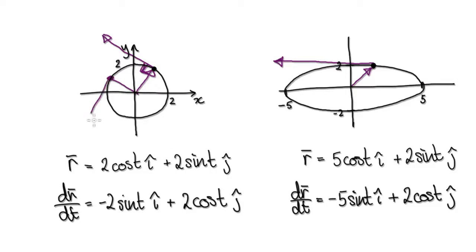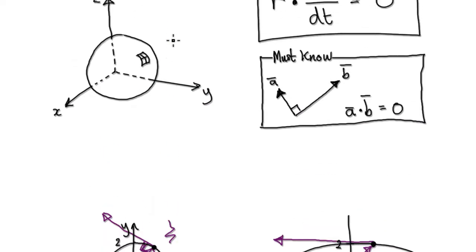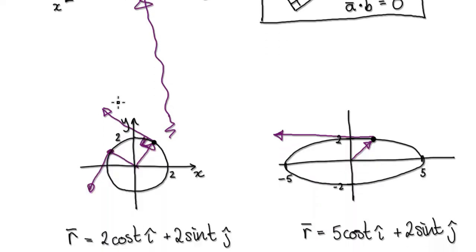For the ellipse, the position and velocity vectors are not always at 90 degrees. Whereas for a circle or sphere, the two vectors will always be at 90 degrees regardless of where the particle is. You can extrapolate this from 2D to a sphere in your mind.